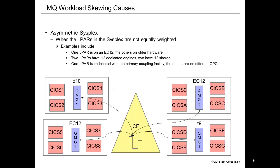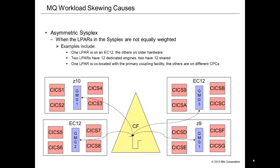One of the first workload skewing causes we've seen repeatedly — and it tends to be cyclical as people upgrade their hardware — is what we call the asymmetric SysPlex problem. As you can see on the slides, you may end up in an environment with mixed equipment, such as two EC12s, one Z10, and one Z9. Because of the faster processors on the EC12 engines, the vast majority of your workload may go to the queue managers and CICS regions on those machines. This is normal, but it can really impact your monthly rolling average and the distribution of work you'd like to see.